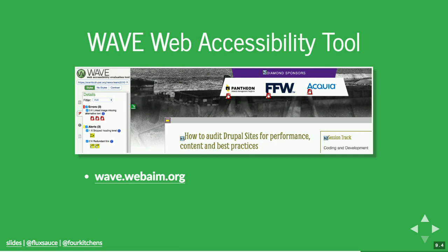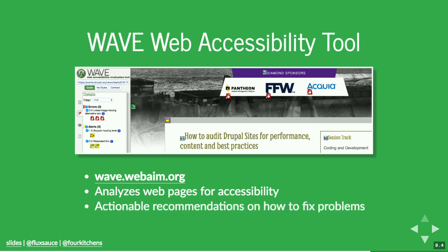Another utility that does a different kind of analysis is the WAVE Web Accessibility Tool, available at wave.webaim.org. It analyzes webpages for accessibility best practices — checking things like whether you have proper alt text, for example. It also provides actual recommendations on what to do about it. Accessibility is very important — not only for people who need assistance accessing content, but it also helps robots and crawlers consume the content of your site, and produces a better-structured experience overall.